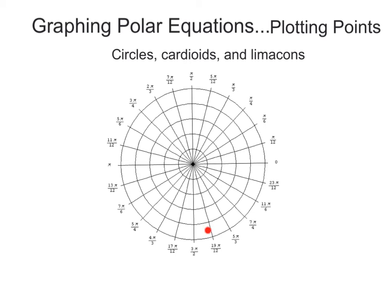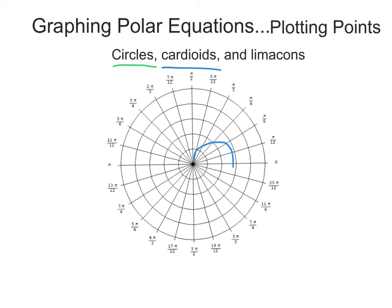Hopefully by now you're somewhat familiar with polar coordinates and how to plot points on a polar graph, because we're going to be graphing some serious polar equations in this video. The three types of graphs we're going to be working with: first off is circles. Second is cardioids — you might think cardiac or cardio and think of hearts, and you'd be exactly right. A cardioid looks somewhat like a heart, kind of like a circle with a pinched end.